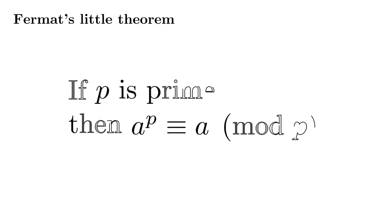Today, we'll use Fermat's Little Theorem. Now, let's recall what this says. If p is prime, then a to the p is congruent to a mod p.